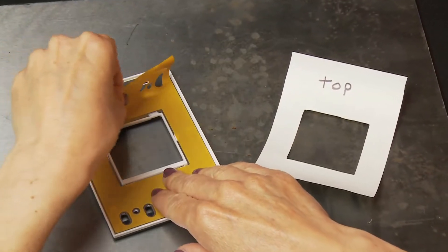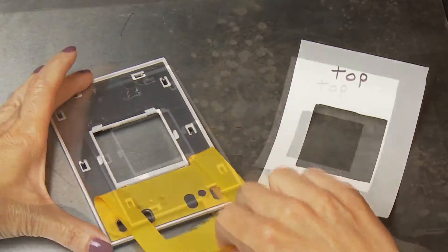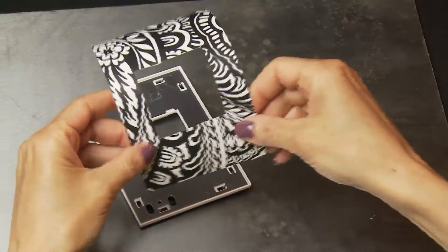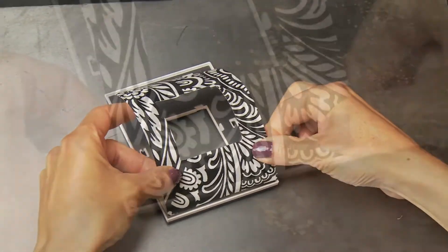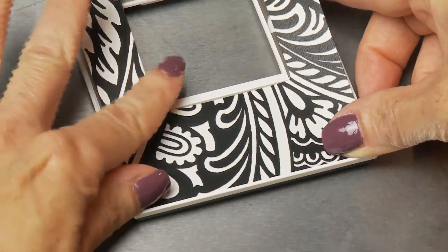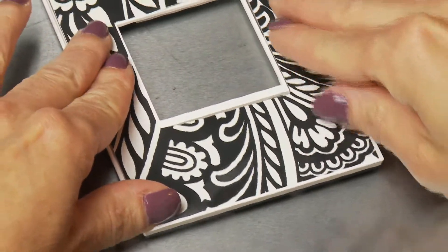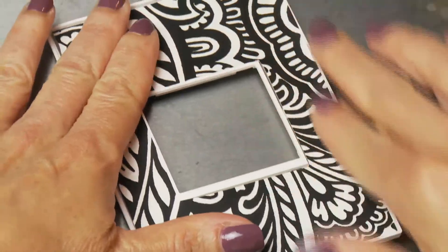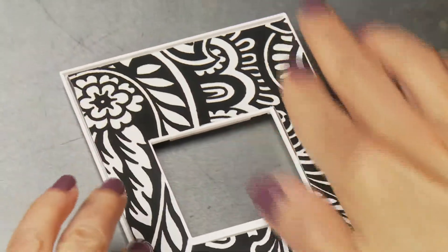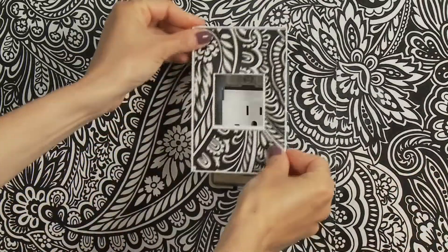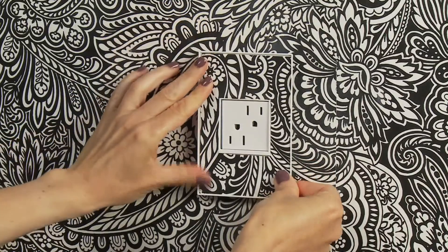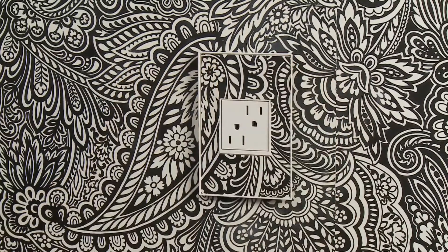Now remove the peel and stick from the Adorn wall plate and place the wallpaper piece onto it with the side that says top facing down. Firmly press on the wallpaper to be sure it's securely attached to the wall plate. Your Adorn wall plate is now customized with the wallpaper that you want and ready to be installed.